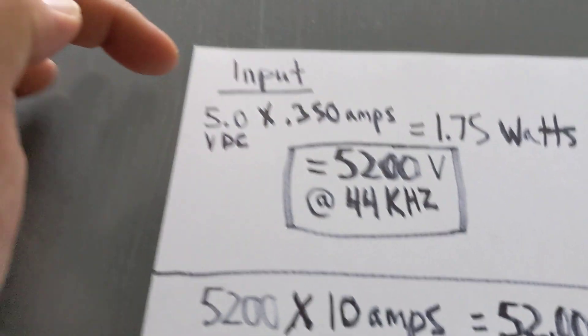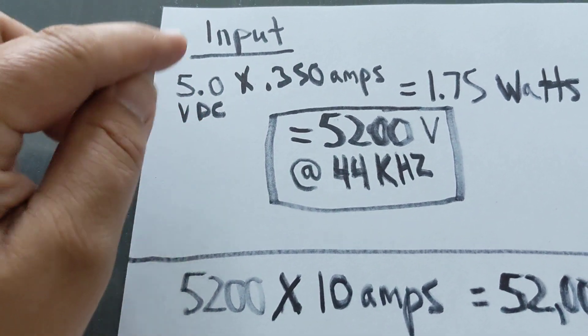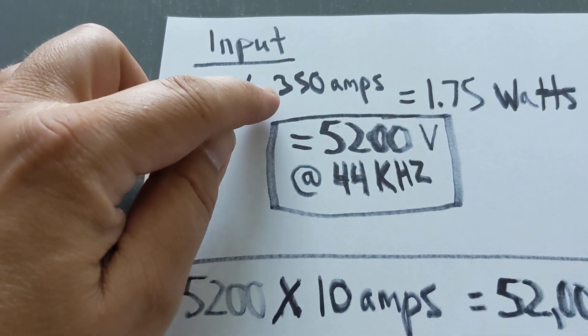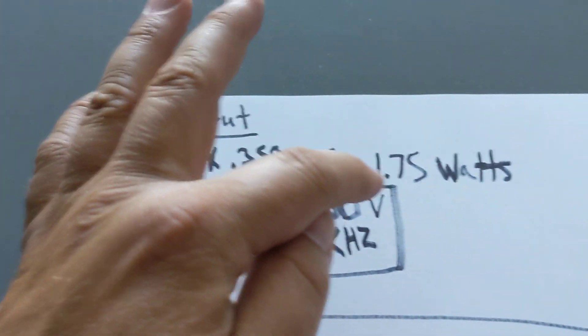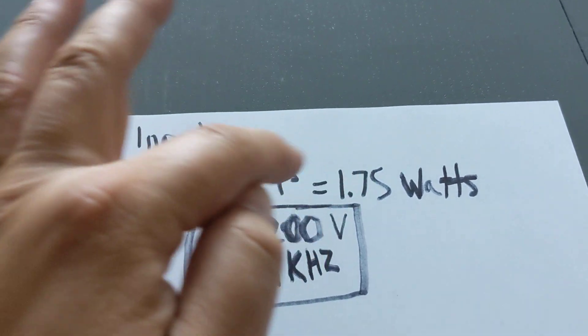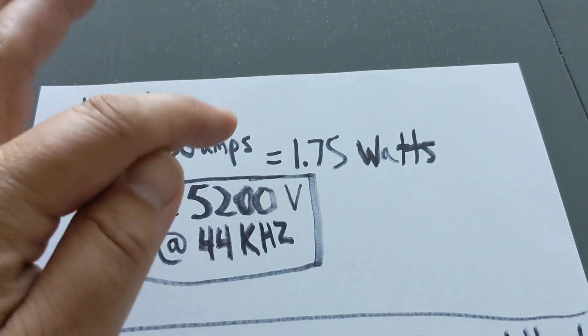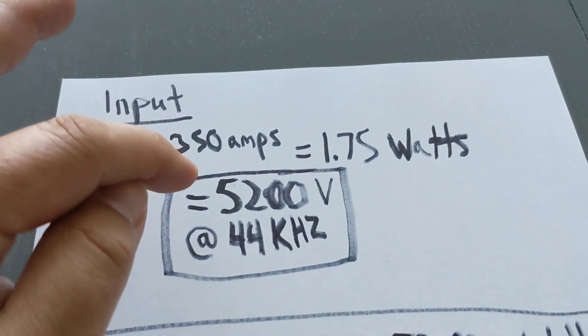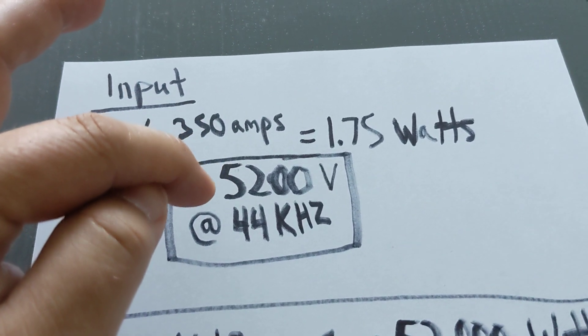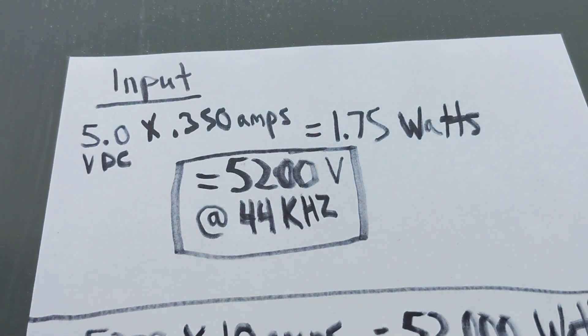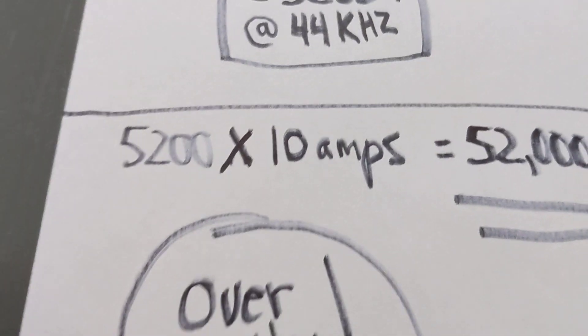So for an example, with this high voltage module, I can put 5 volts DC input times that by 0.35 amps. That's what it takes to run this little module. Basically, it translates to 1.75 watts. Now, with that 1.75 watts, I have now created 5,200 volts AC at 44 kilohertz. These two numbers are very important.